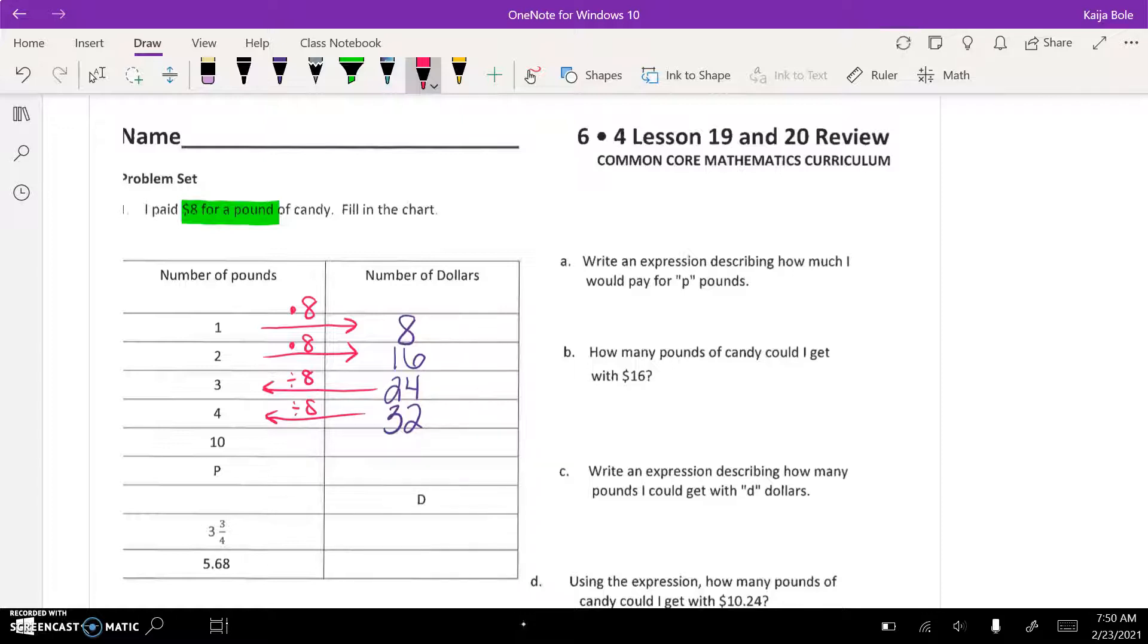So to get across the table from ten over the other way, we're going to multiply by eight, so that'd be 80. And now here I have the expression, so I'm multiplying going this way, so that would be 8p. And then the other way I'm dividing, so this would be d over eight, and we want to use a fraction bar.